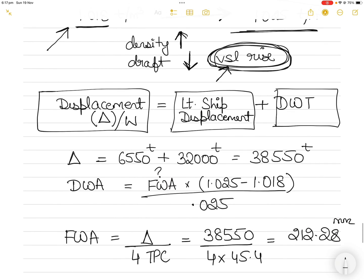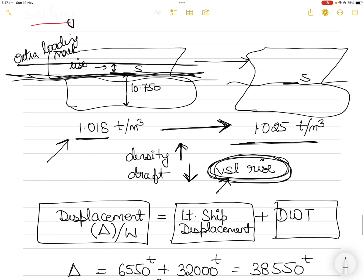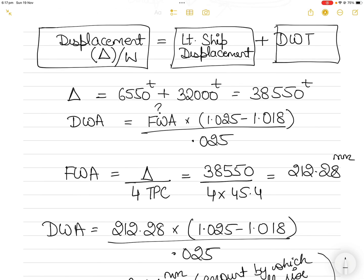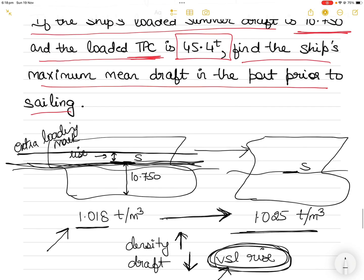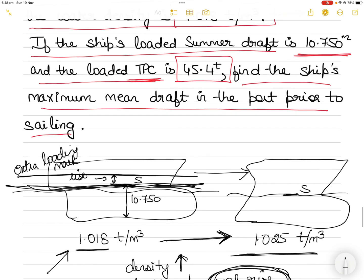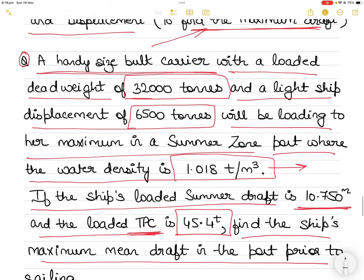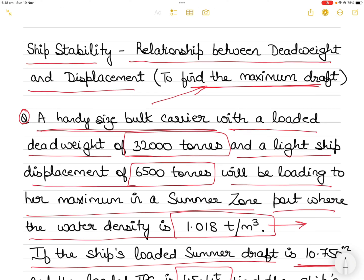Although the question seems a little complicated, it was a very simple question if you know the relationship between displacement and deadweight, and you know the relationship between dock water allowance and fresh water allowance. You can calculate the maximum draft to which the ship can be loaded. If the ship were going from 1.018 to a density less than 1.018, the ship would have sunk further. Let me know if this was easy or complicated — thank you for watching, please like, comment, share, and subscribe.